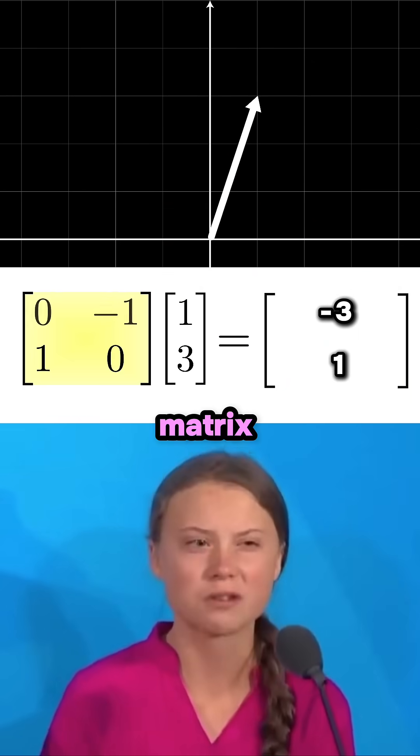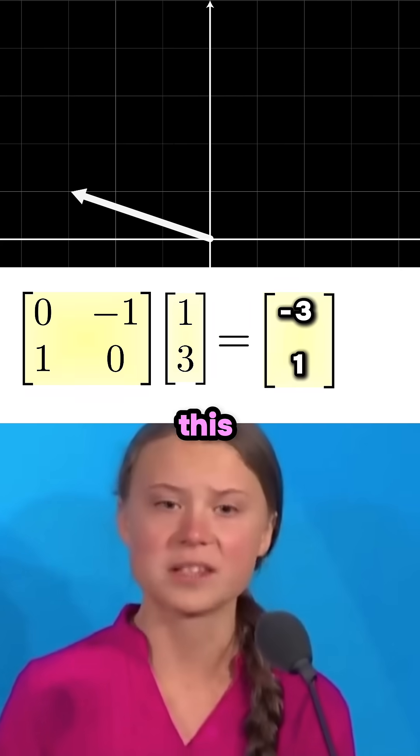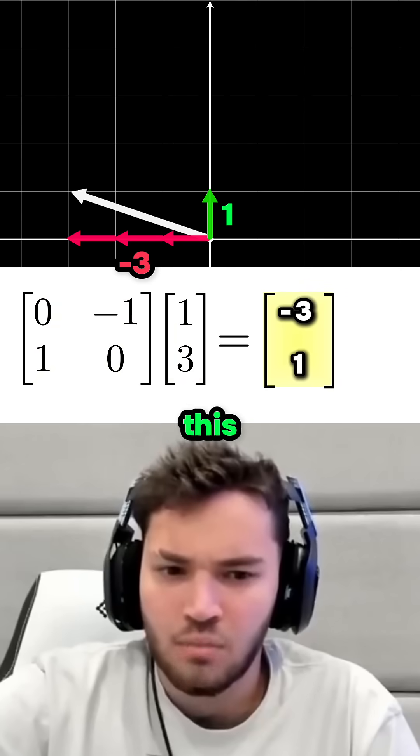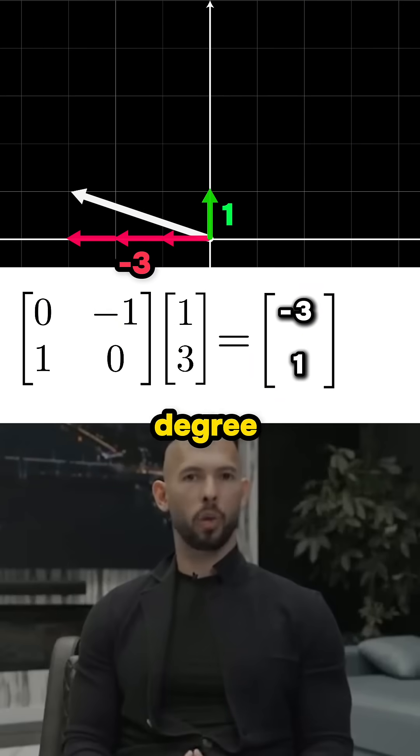So by multiplying the matrix by our original vector (1, 3), we've transformed it into this new vector (-3, 1). Oh, so this matrix turns vectors anti-clockwise? A perfect 90 degree rotation.